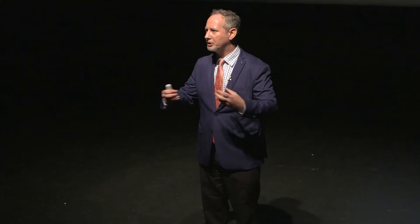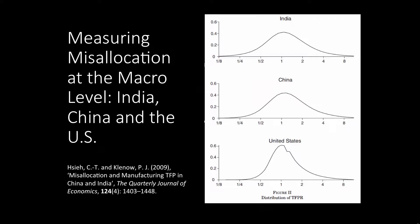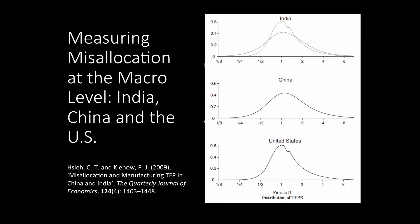Recently, this has come to be analyzed in a number of really important, quite new papers. Hsieh and Klenow, in a key paper on misallocation, studied this dispersion in marginal product — or closely related marginal costs — in India, in China, and in the United States. Two things are important: first, this dispersion is bigger than we might imagine — it's pretty big in all economies. But it's also much bigger in China and India than it is in the United States. Overlaying the US graph, we can see there is less dispersion in the United States.